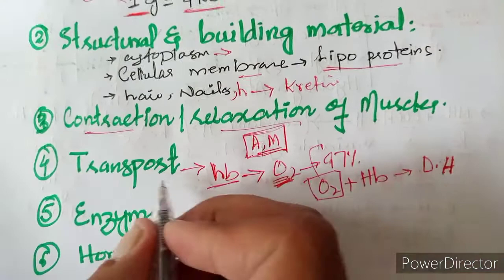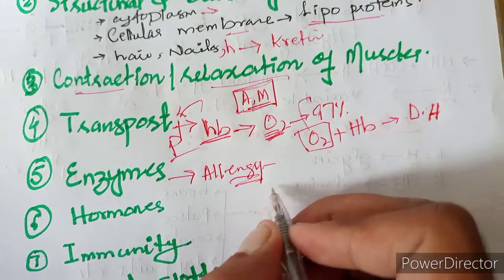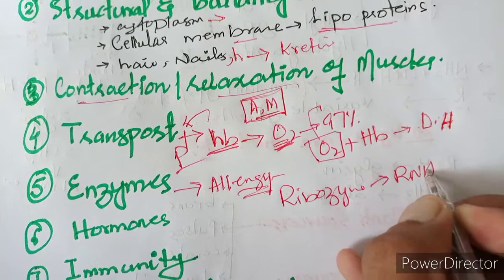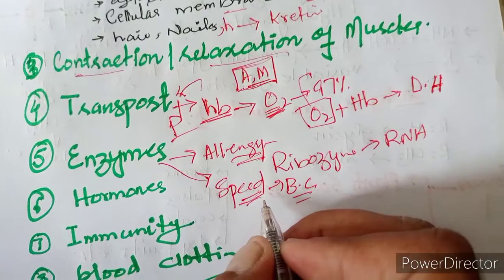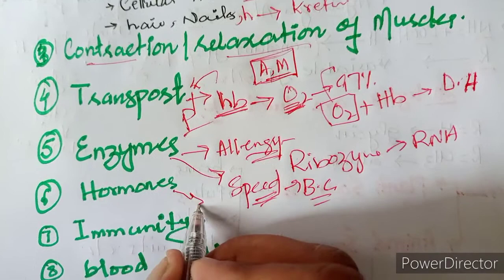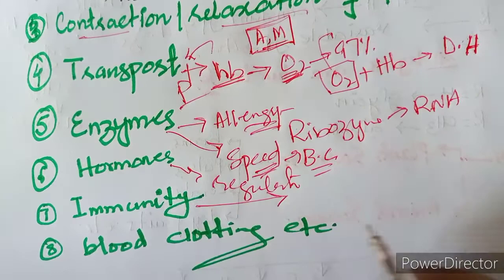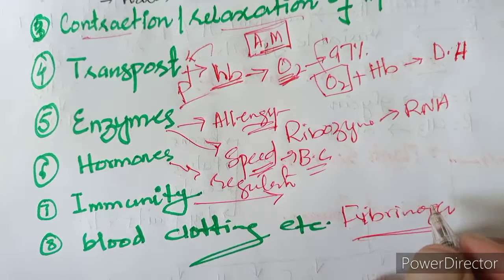All enzymes are protein in nature, except ribozyme, which is RNA. Enzymes are important biological catalysts that speed up biochemical reactions. Hormones are also proteins and are important in regulating body functions. Proteins are important in immunity and in blood clotting — for example, fibrinogen is a protein involved in blood clotting.